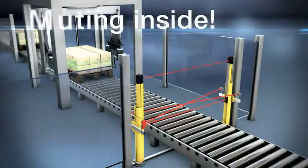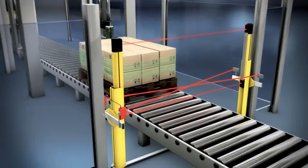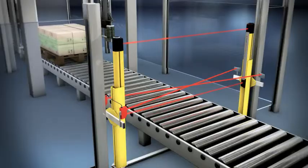The selection of partial muting isn't a problem either for the Leutze electronic sensor. Lower beams are muted, the upper beam remains active, removing the need for further safeguarding.